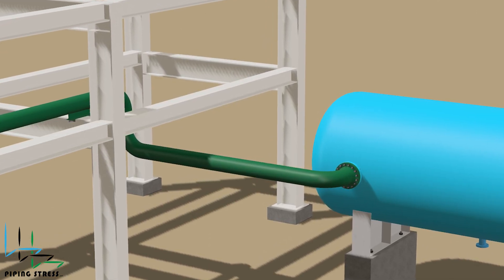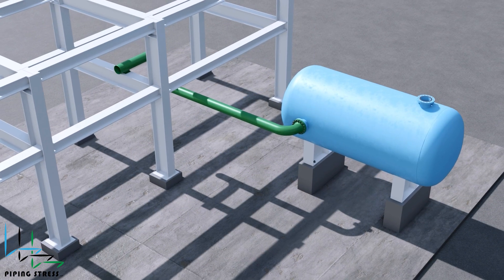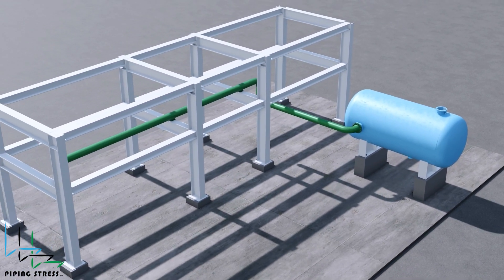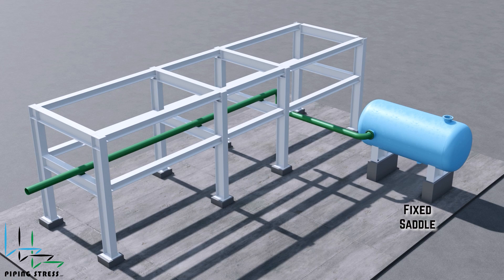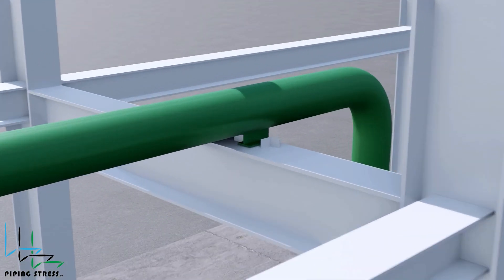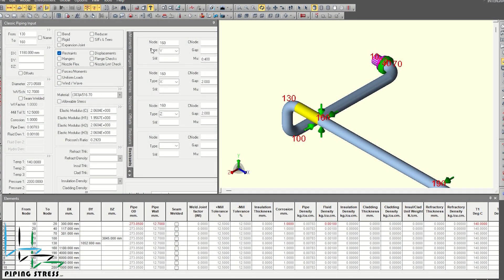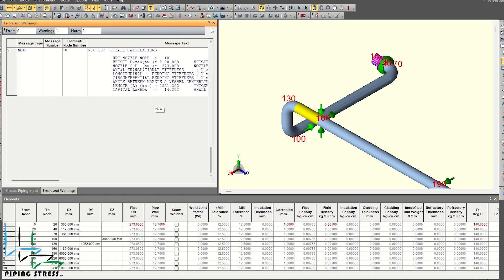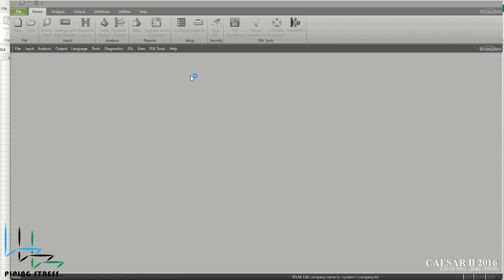We will discuss four scenarios here, and try to explain their pros and cons to you using the Caesar 2 outputs. In the first scenario, we have positioned the equipment's saddle far from the pipe rack. In this case, we will observe the loads applied to the nozzle in the existing design. Additionally, we placed a guide on the first support of the pipe on the pipe rack. Let's see what happens to the nozzle and the pipe under these conditions. After inputting all the data and building the model in Caesar 2, we run the analysis after configuring the settings. We also define the load cases. We plan to make a separate video in the future to discuss load cases.